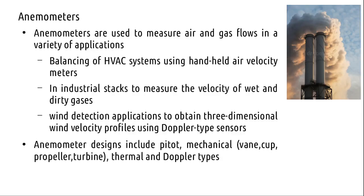Anemometers are used to measure air and gas flow — simply put, fluid flow. For example, this is an industrial stack, and anemometers can be used to measure the velocity of gases there. In heating, ventilation, and air conditioning (HVAC) systems, they can be used to detect flow. They can also be coupled with pitot tubes — a pitot tube plus hot wire anemometer combination can be used in HVAC systems as well.